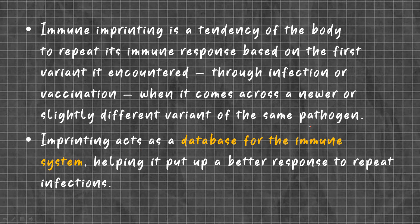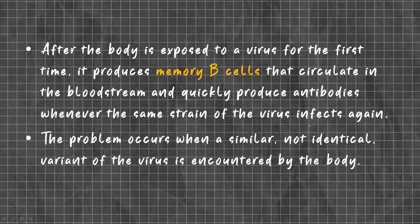Immune imprinting is the tendency of the body to repeat its immune response based on the first variant it encountered through infection or vaccination, when it comes across a new or slightly different variant of the same pathogen. Imprinting acts as a database for the immune system, helping it mount a better response to repeat infections. After the body is exposed to a virus for the first time, it produces memory B cells that circulate in the bloodstream and quickly produce antibodies whenever the same strain of virus infects again.